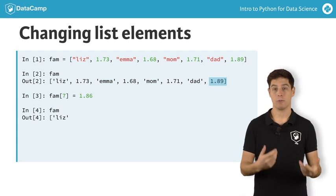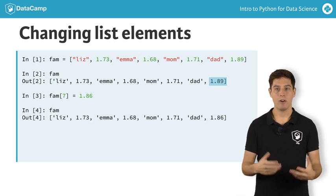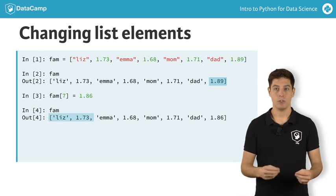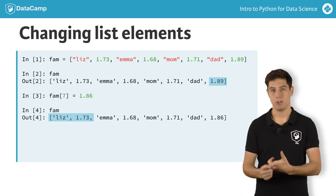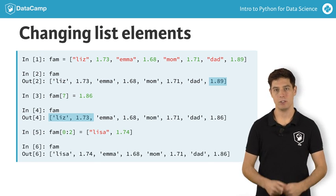If you now check out fam, you'll see that the value is updated. You can even change the entire list slice at once. To change the elements list and 1.73, you access the first two elements with 0,2, and then assign a new list to it.